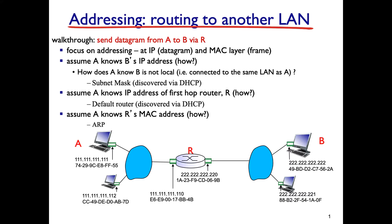Now we'll see how a host transmits a packet from one subnet to another, traversing a router, using both IP and MAC addresses. On the left is one subnet, on the right is another, connected via router R. Every node — whether host or router — has an IP address and an adapter MAC address. The router has two interfaces, left and right. Let's trace how A sends a datagram to B via R.